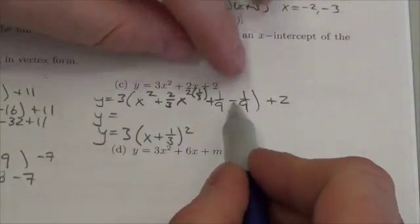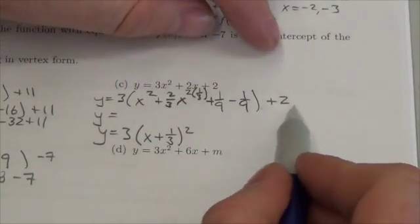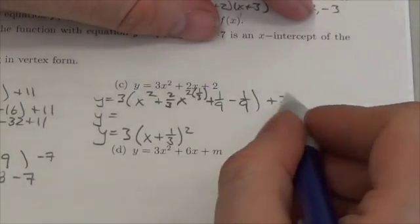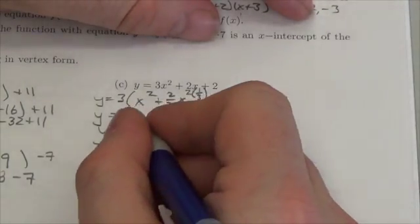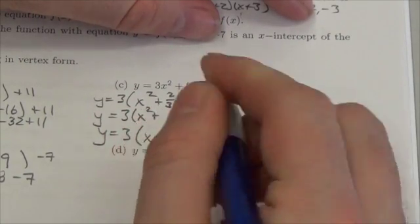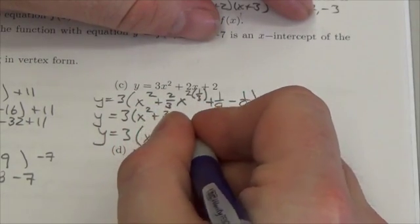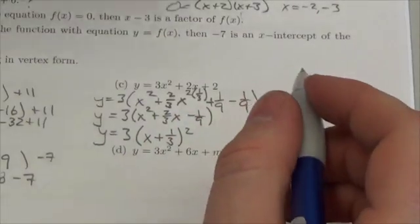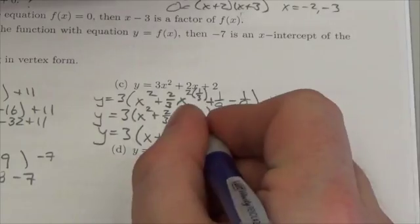Now what I got to do is I got to get that negative term out and combine it with the vertical translation that I have out here. So this will be 3 times x squared plus 2/3 x minus 1/9, sorry, plus 1/9. I don't know why I said that. Plus 1/9.